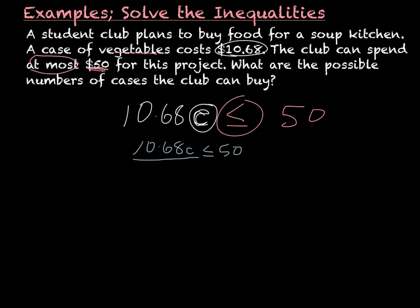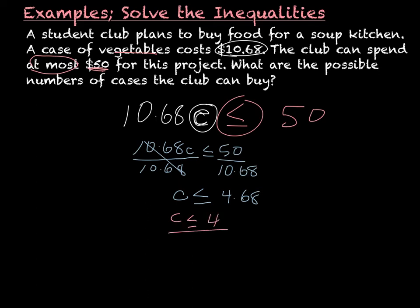So the inequality is: ten sixty-eight times C is less than or equal to fifty. I divide by ten point six eight, and C is less than or equal to four point six eight. But you can't buy point six eight of a case, and they don't have enough money to buy five cases. So C is actually less than or equal to four, because you have to buy a full case. The club can buy four or fewer cases of vegetables.